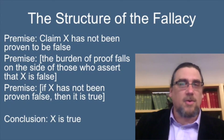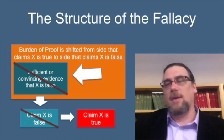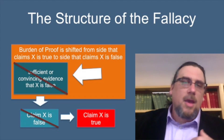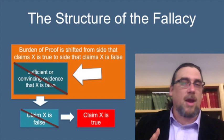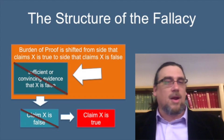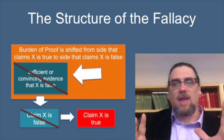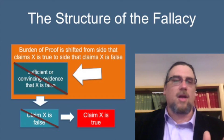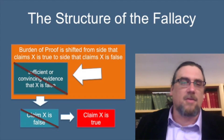You have to make those kinds of assumptions to make this argument work. What's going on is that the burden of proof is being shifted from the side that claims X is true to the side that claims X is false, saying that they have to demonstrate it with sufficient or convincing evidence. If that evidence doesn't count, you reject the claim that X is false — and since you're rejecting that, you conclude X is true. There's the fallacy in a nutshell.